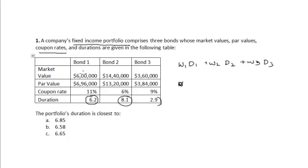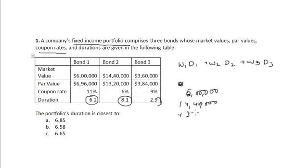The sum of the market values of all three bonds is six lakh dollars plus fourteen lakh forty thousand dollars plus three lakh sixty thousand dollars, which equals twenty-four lakh dollars.